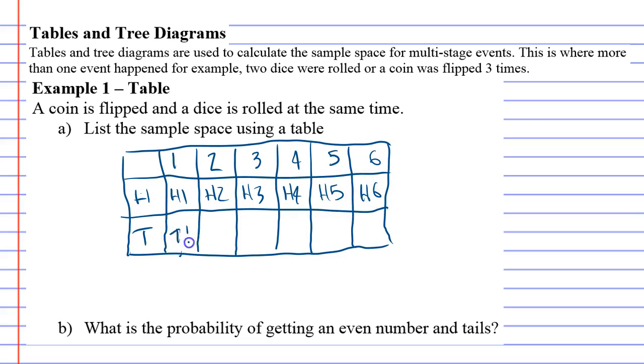And then we've got our tails. And what you'll notice is this represents our sample space. And it's got 12 elements in the sample space. 1, 2, 3, 4, 5, 6, 7, 8, 9, 10, 11, 12 different possible outcomes that we could have had.